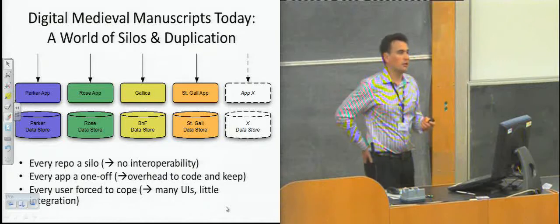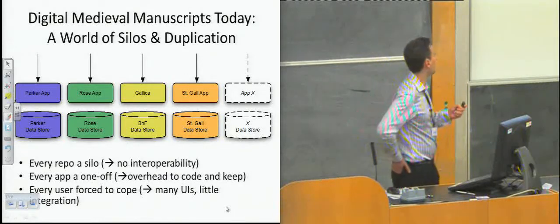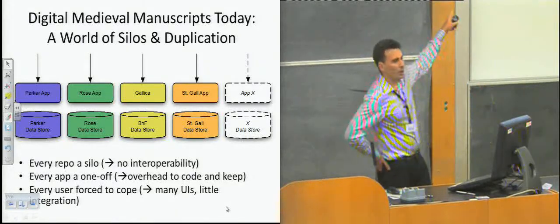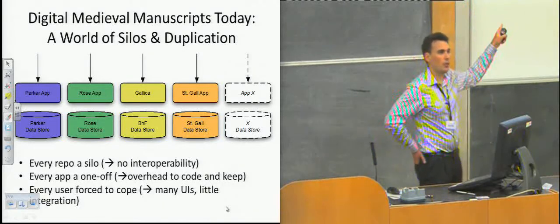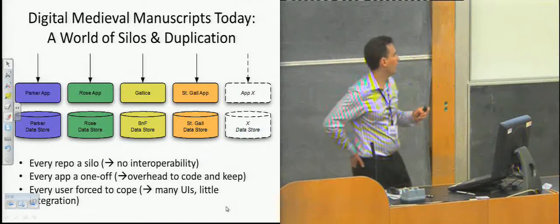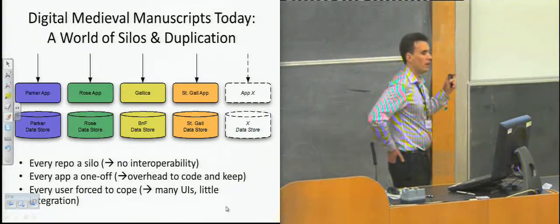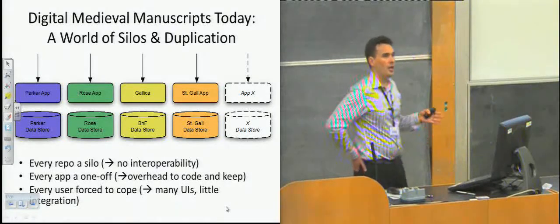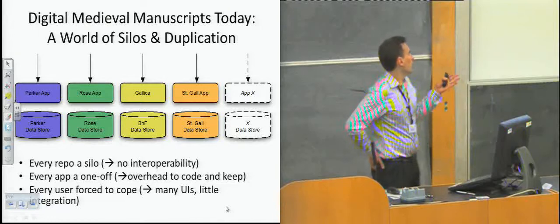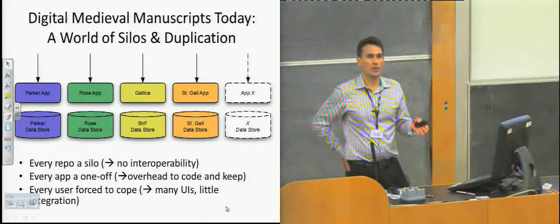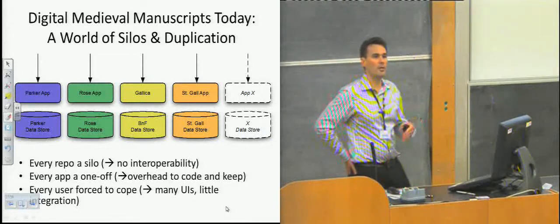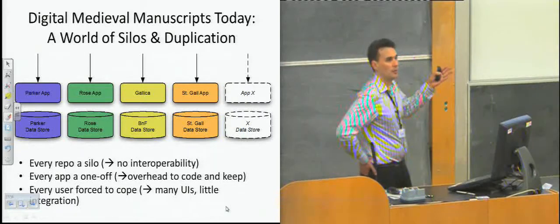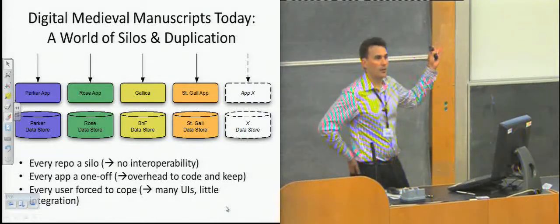Several of the scholars involved in these projects and the Mellon Foundation started asking, how come we keep getting lots of different interfaces for this content? In fact, I'd like to compare a Parker manuscript with a Rose manuscript. How do I do that? And we didn't have a good answer. The problem we have now is every repository is essentially a silo. It's its own content, its own data models, its own application interfaces. There is no way to bring Rose content into the Parker environment and vice versa.